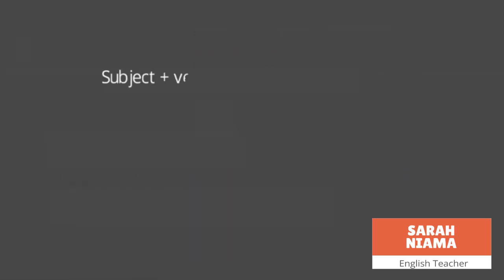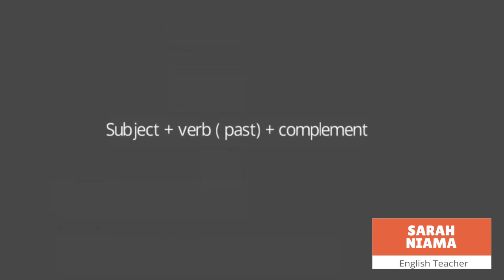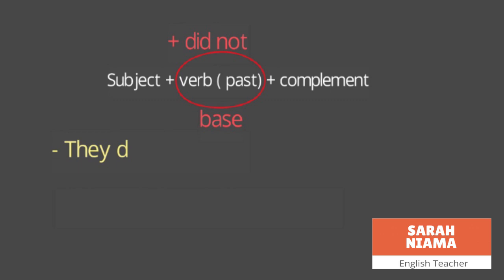If we want to negate a past simple sentence, we add 'didn't' after the subject, and the verb returns to its base form — free from any additions. For example: 'They didn't find me.' Here 'they' is the subject, 'didn't' makes it negative, 'find' is the base verb, and 'me' is the complement.